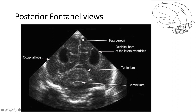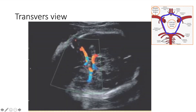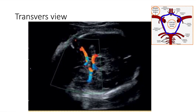You can also look at the brain from the posterior fontanelle, which gives a very good view of the cerebellum and allows you to look at cerebellar hemorrhages. This is a transverse view of a baby with post-hemorrhagic hydrocephalus — you can see the dilated lateral ventricles on each side as well as a dilated third ventricle. With good probe technique, you can also see the whole circle of Willis.